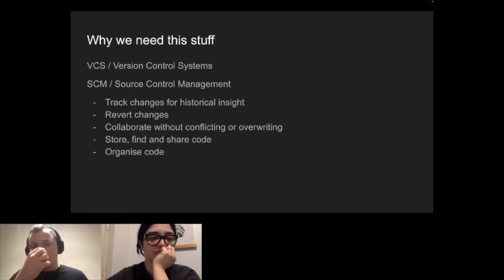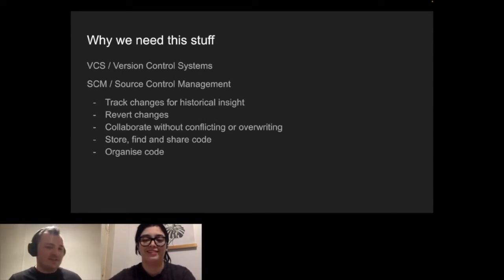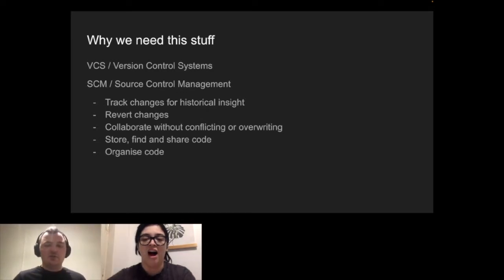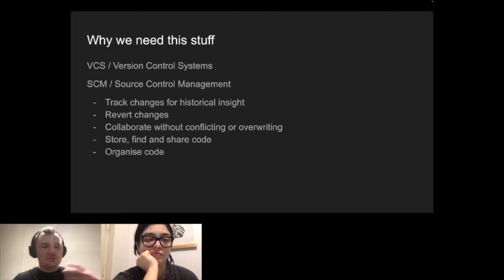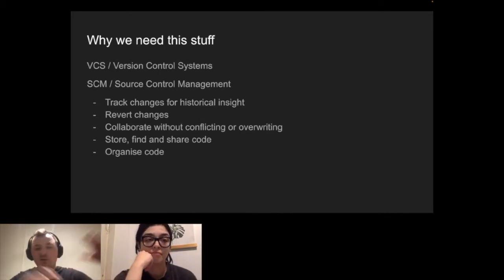Let's talk about the why, the how, and the what. Why do we actually need this stuff? VCS, or SCM — version control systems or source control management software like Git — is essentially used to track changes, store code, find this code, share it with other people, collaborate without conflicting or overwriting people, be able to write code, put it into place and then revert it, and organize our code in general.